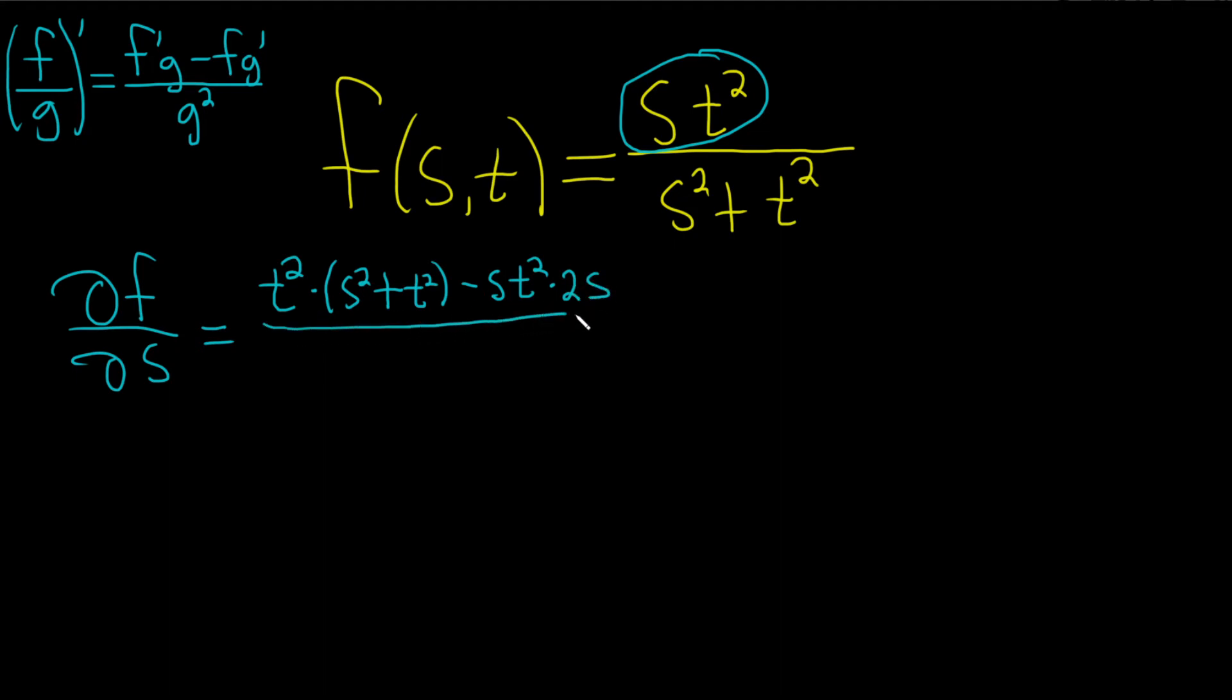All of this is being divided by the bottom piece squared, so parenthesis s squared plus t squared quantity squared.